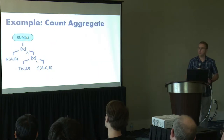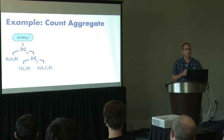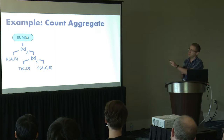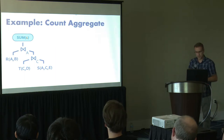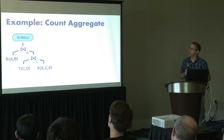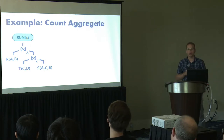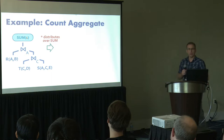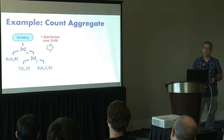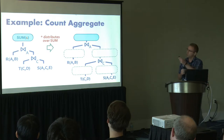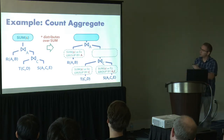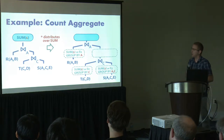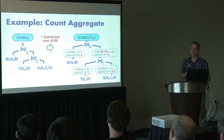Let's have a simple example. Suppose I want to compute a count over a join of three relations R, S, and T. Here, I first join S and T on C, and the result is joined with R on A. One way to handle this is to compute the join result and then count the tuples in the output — but this is not the most efficient way. We can exploit the distributivity of multiplication over addition to push the sum aggregate past joins, computing partial counts over input relations grouped by the join variables. Once we have these partial counts, we combine them to produce the final aggregate.